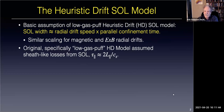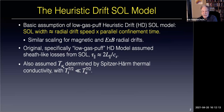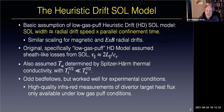It assumes sheath-like losses from the scrape-off layer, where tau-parallel was set to 2L-parallel over C-sound. We also assumed—somewhat contradictorily, though it works out—that the upstream temperature was determined by Spitzer-Härm thermal conductivity, because the target temperature to the seven-halves was much less than the upstream temperature to the seven-halves. The T-to-the-seventh difference is what makes this slightly odd combination work. These are odd bedfellows, but they work well for experimental conditions.